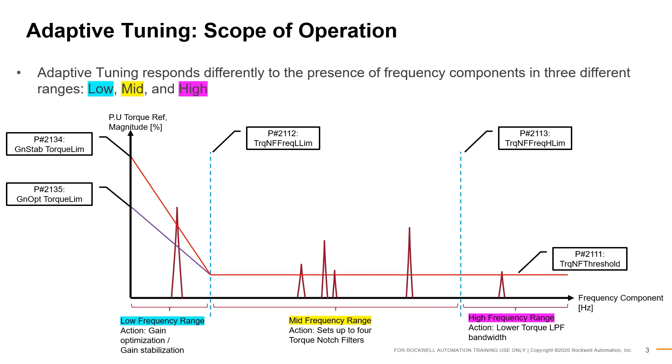In the high frequency range, the available action is the detuning of the torque reference low pass filter. The presence of high frequency components often hint at a system entering instability, and the lowering of the torque reference low pass filter bandwidth serves as a stop gap measure to prevent the system from becoming unstable. This prevents imminent faults resulting from unstable operating conditions, allowing for uninterrupted system runtime.